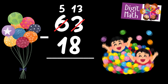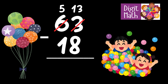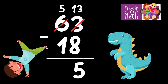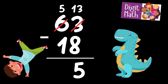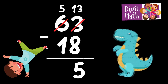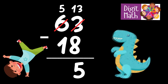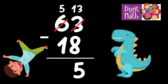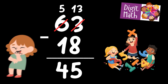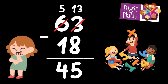Now, we have 13 in the Units column. Subtract 8 from 13, which equals 5. In the Tens column, we now have 5. Subtract 1 from 5, which equals 4. So the final result is: 63 minus 18 equals 45.